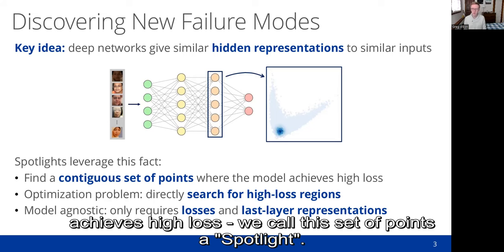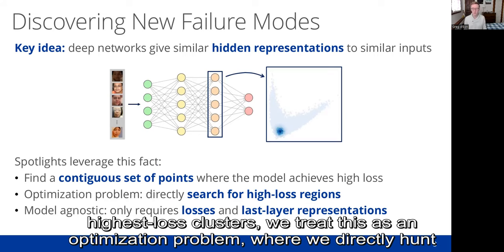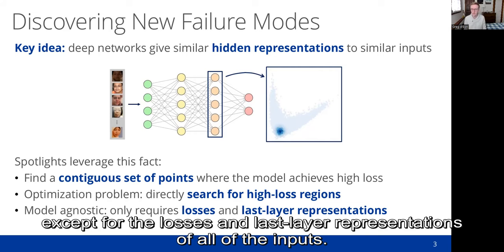Unlike prior work, which has thought about clustering this space and then reporting the highest loss clusters, we treat it as an optimization problem where we directly hunt for the high loss regions in this space. The resulting approach is model agnostic because we don't need to know any details of the model except for the losses and last layer representations of all of the inputs.